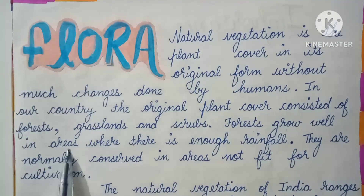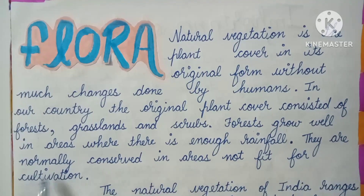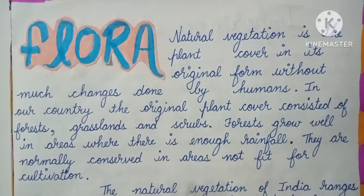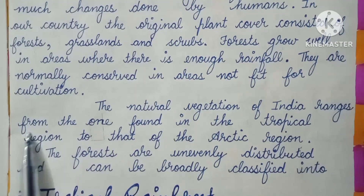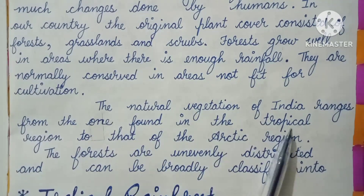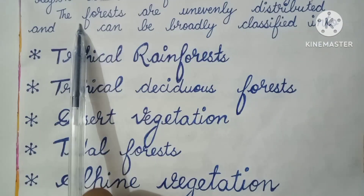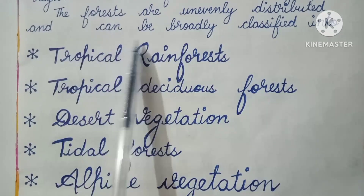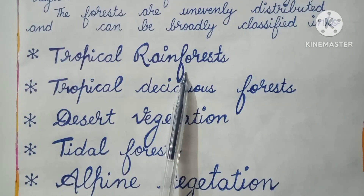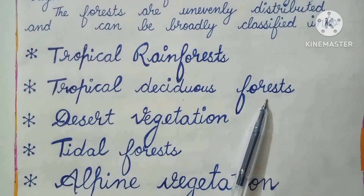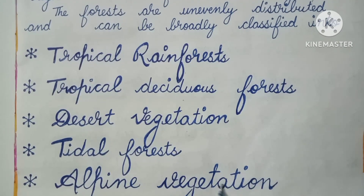Forests grow well in areas where there is enough rainfall. They are normally conserved in areas not fit for cultivation. The natural vegetation of India ranges from that found in the tropical region to that of the Arctic region. The forests are unevenly distributed and can be broadly classified into: Tropical rainforests, Tropical deciduous forests, Desert vegetation, Tidal forests, and Alpine vegetation.